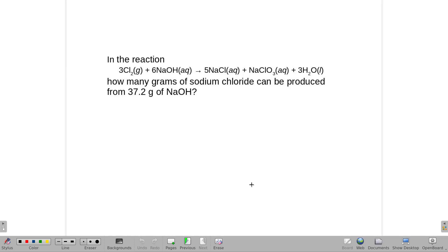In the following reaction, how many grams of sodium chloride can be produced from 37.2 grams of sodium hydroxide?